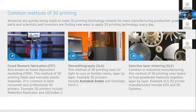Another method of 3D printing is Stereolithography, also called SLA. This method uses light to cure or harden resins. When resins are exposed to UV rays, the moment the UV hits the particles of the resin, it becomes hard. An example is the Formlabs printer, which we have ordered for SLA.